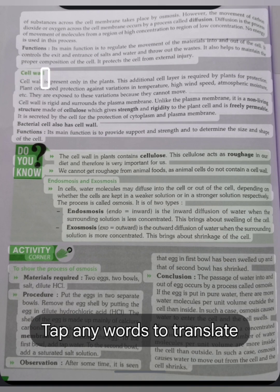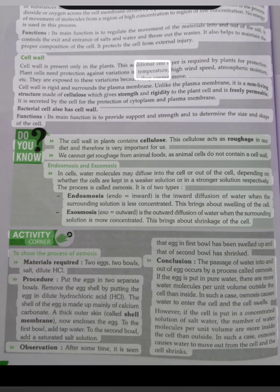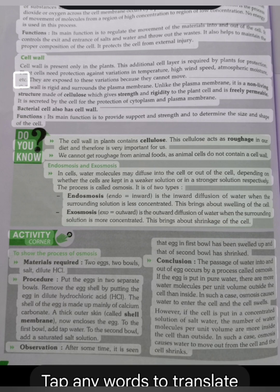Cell wall. Cell wall is present only in the plants. This additional cell layer is required by plants for protection. Plant cells need protection against variations in temperature, high wind speed, atmospheric moisture, etc. They are exposed to these variations because they cannot move. Cell wall is rigid and surrounds the plasma membrane. Unlike the plasma membrane, it is a non-living structure made of cellulose which gives strength and rigidity to the plant cell and is freely permeable. It is secreted by the cell for the protection of cytoplasm and plasma membrane. Bacterial cell also has cell wall. Functions: Its main function is to provide support and strength and to determine the size and shape of the cell.